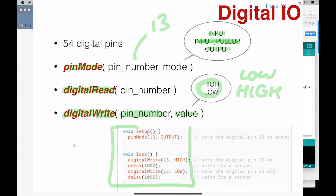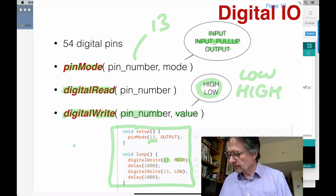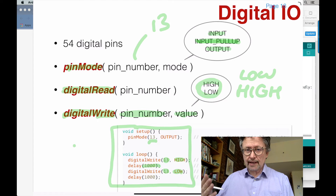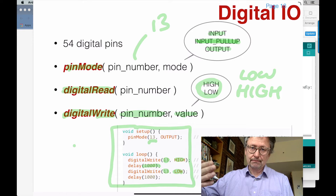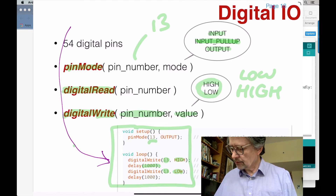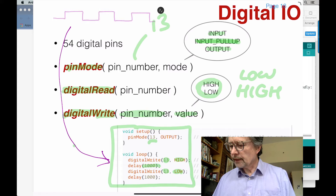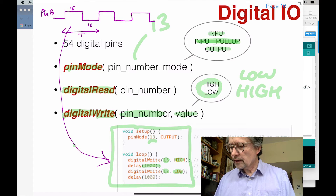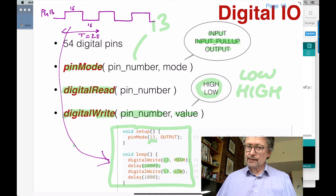Here is the blink sketch. In setup, I'm setting pin 13 as output — pin 13 is the pin connected to the onboard LED. In the loop that runs repeatedly, I set pin 13 to HIGH, wait one second (1000 milliseconds), set pin 13 LOW, wait one second. Then the loop function ends and is called again right away. So the signal on pin 13 will look like a square wave with a one-second high, one-second low, giving a period T of two seconds.